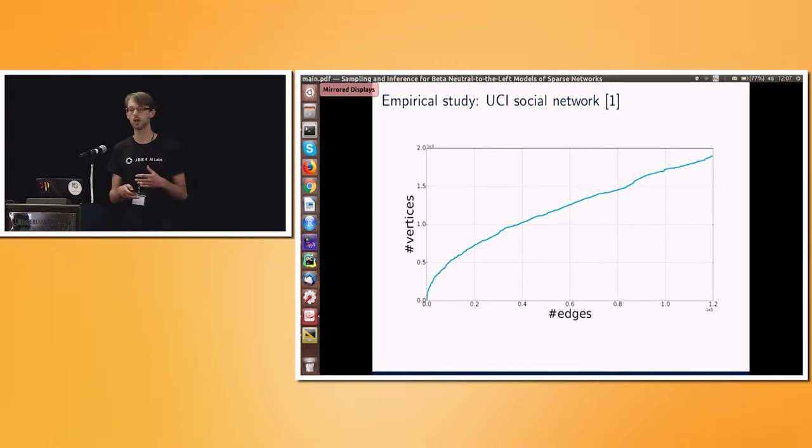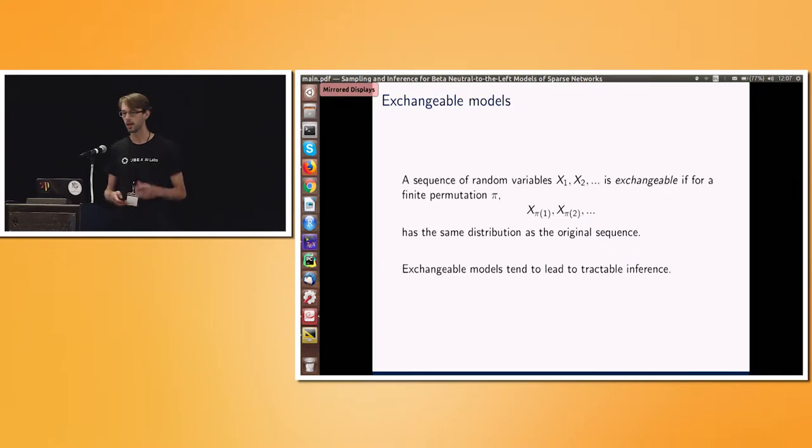So I'm now going to switch track and talk about models and models that try and capture those sparsity classes. And a building block of understanding these models is exchangeability, hopefully a concept we're familiar with. But an exchangeable model is one where the sequence of random variables, maybe X, is invariant to permutation. So when we take a finite permutation, reorder some data points, that distribution should remain the same.